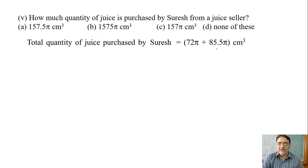If you add, you get 157.5π cm³. Which option is correct? Option A. Right. This is the last question of this case study.